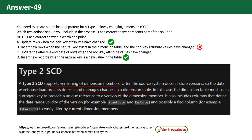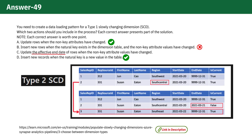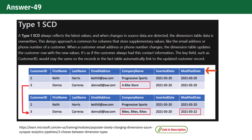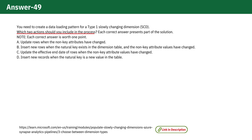If you considered Option C as correct, you should have been sure that the SCD table the question is asking about has an effective end date column. Managing effective dates is a characteristic of a Type 2 SCD, where it's necessary to track the historical period during which certain data values were valid. In a Type 1 SCD, there is no concept of tracking historical periods with start and end dates because data is simply overwritten. Like in the documentation, if you see there is a modified date in SCD Type 1 and if the question provided this image, we would be confident that option is also correct. But again, the question asks to select the two actions, and the most important ones are Option A and D.